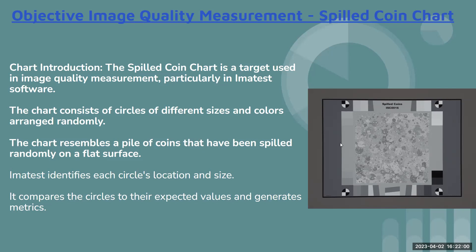IMATEST has an algorithm which can identify each circle's location and size, and it compares the circles to their expected values and generates a matrix. The chart comes in two versions: black and white, and color. Mostly we use the black and white version. Color has some advantages but it's not really required.